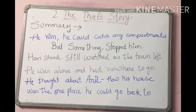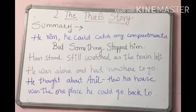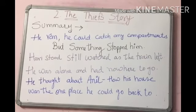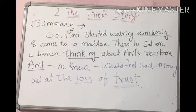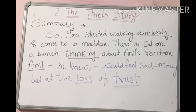He was now alone and had nowhere to go. He thought about Anil — Anil's home was the one place he could go back to. Hari started walking aimlessly, with no clear direction in mind. He came to a maidan and sat on a bench, thinking about what Anil's reaction would be when he found out about the stolen money.